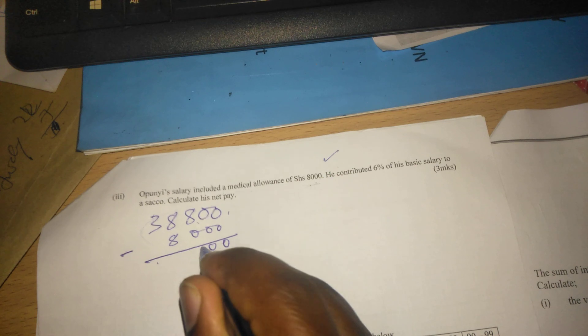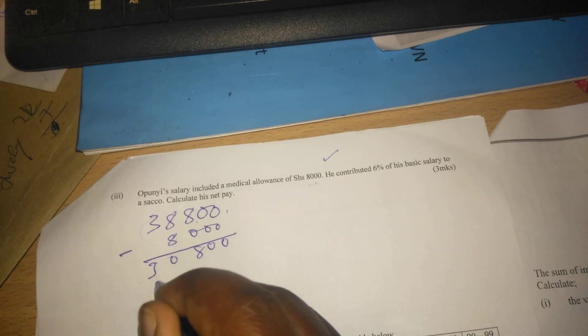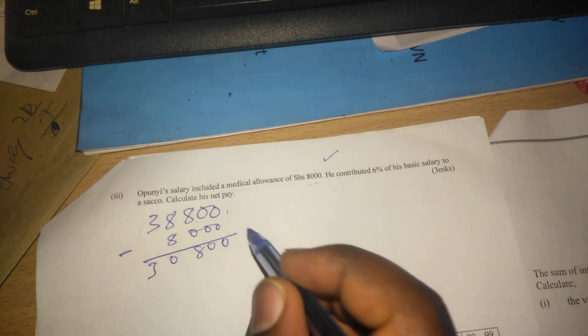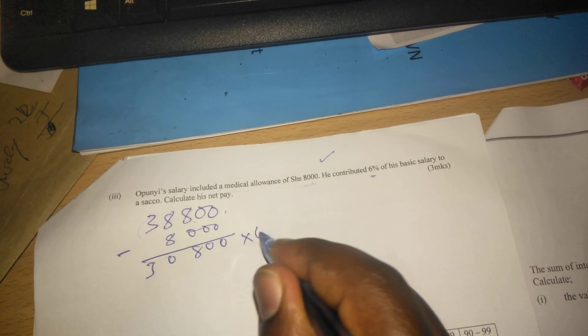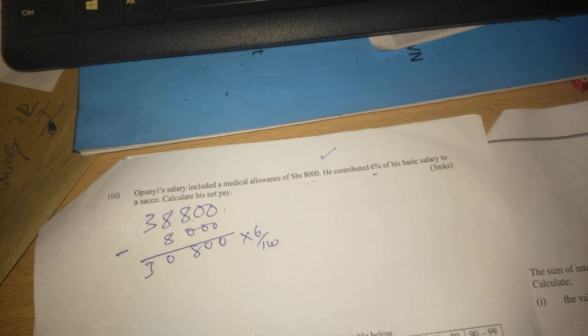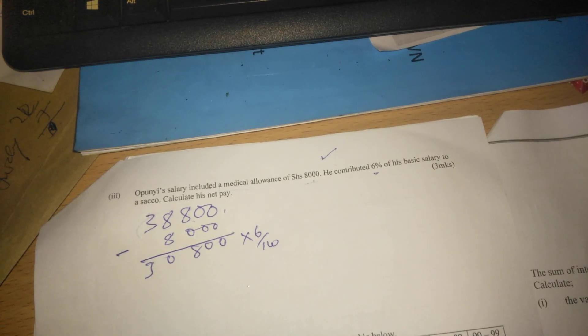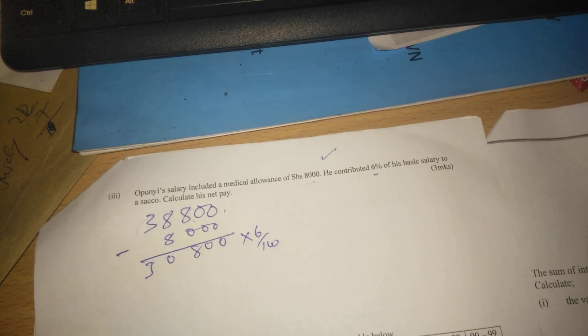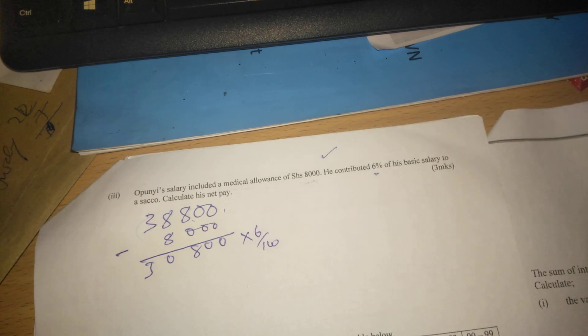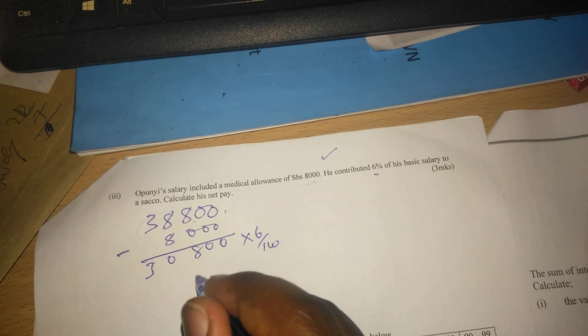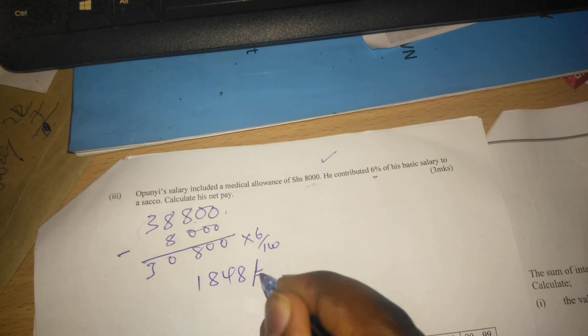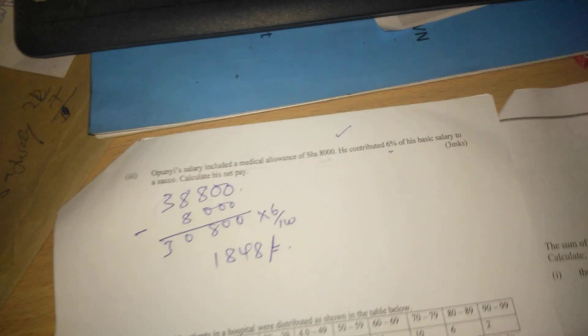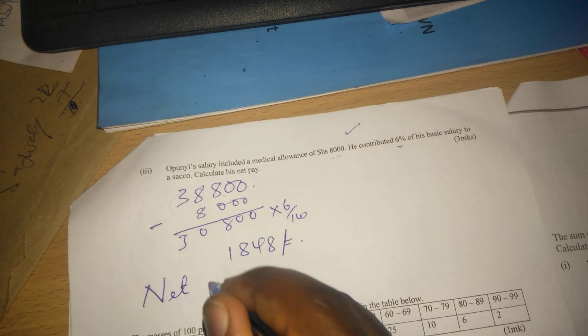This is the basic salary. In the basic salary now he pays 6 percent of this. 6 percent of 30,800 gives us 1,848. So he pays 1,848 to a certain SACCO.